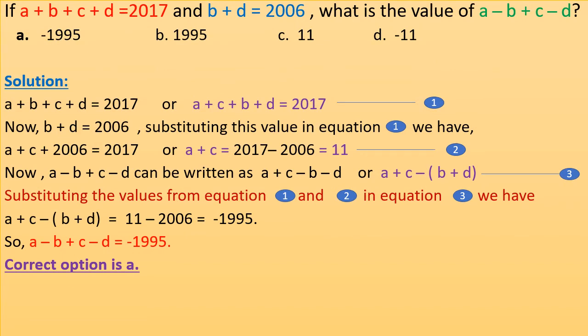If A + B + C + D = 2017 and B + D = 2006, what is the value of A − B + C − D? We can rewrite A + B + C + D = 2017 as (A + C) + (B + D) = 2017. This is equation 1. B + D = 2006.